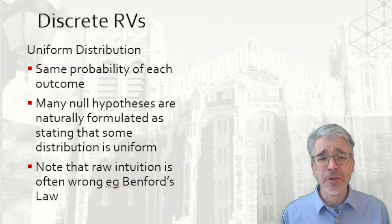Talk about some common discrete random variables that we often use. The uniform distribution comes up quite a lot. That's where there's the same probability of each outcome.